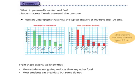Here we have two graphs, what boys usually eat for breakfast and what girls usually eat for breakfast. Here are the breakfast foods that we have listed, and the number of girls and boys. We can see they've counted by 10, and they have bars for each. From these graphs, we can see that more students eat grain products than any other food, so probably cereals and toast. Most students eat breakfast, but some don't.